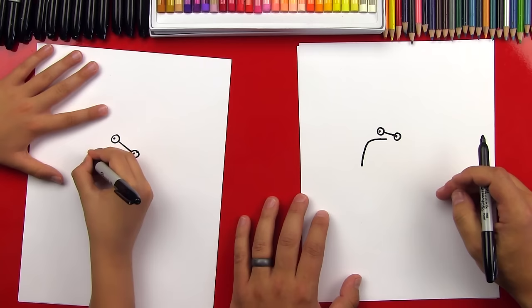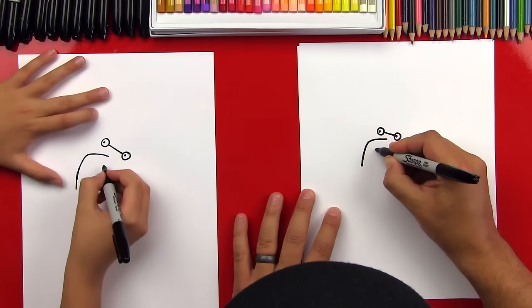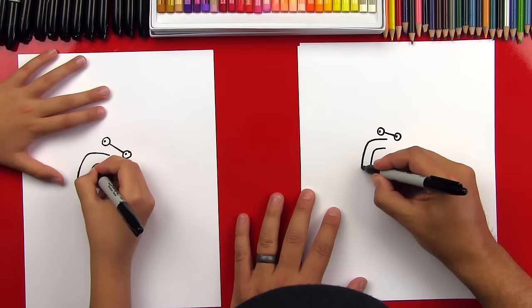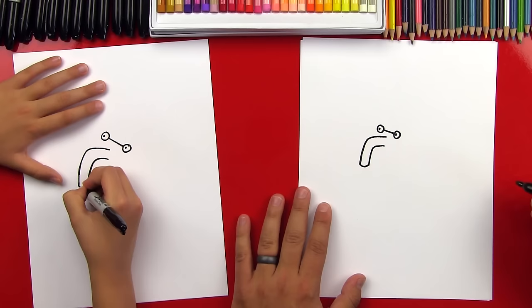And then right below that, we're going to draw the other side of his nose. And then at the bottom, we're going to connect with a little curve from one side to the other.